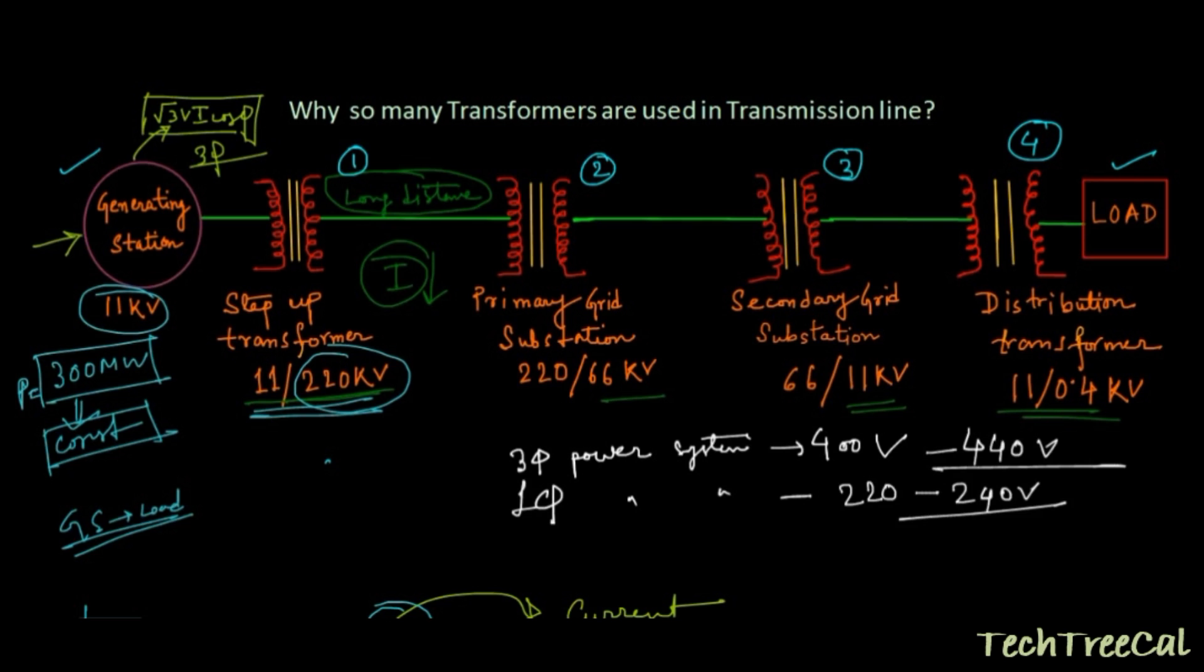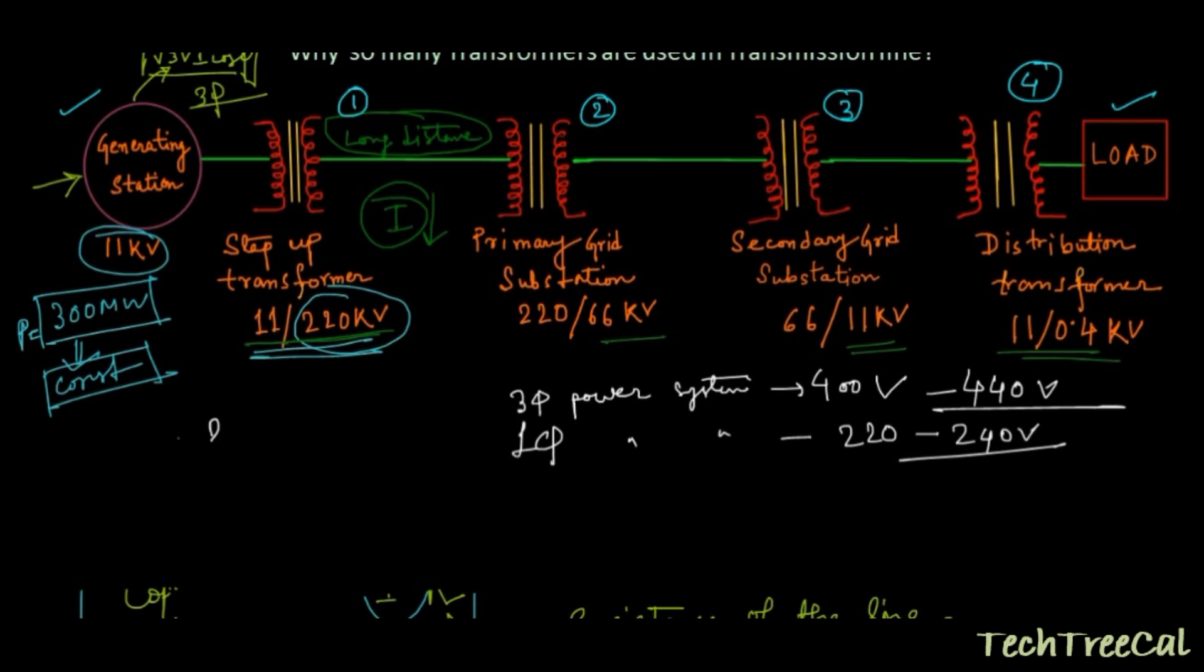And another thing I want to add is different companies maintain different voltage levels. Some companies work at 220 kV, some companies are working at 400 kV, some companies may be working at 700 kV. So it solely depends upon the companies that are supplying or generating or distributing the entire system.